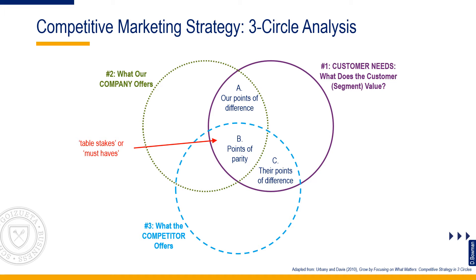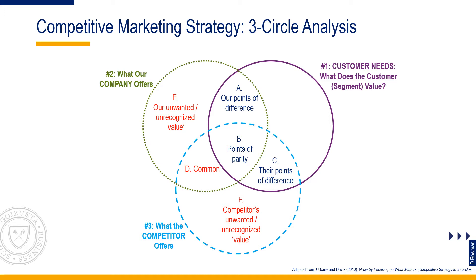Area B contains the points of parity, or table stakes. These are must-haves that do not differentiate you from the focal competitor. Areas D, E, and F are offerings that the customer does not value or does not know about or understand — we call these unwanted or unrecognized value. A challenge when completing these sections without engaging the customer is that you often struggle to find anything that goes here. There is typically a bias towards thinking that everything you do is appreciated by the customer, or else why would you be doing it?